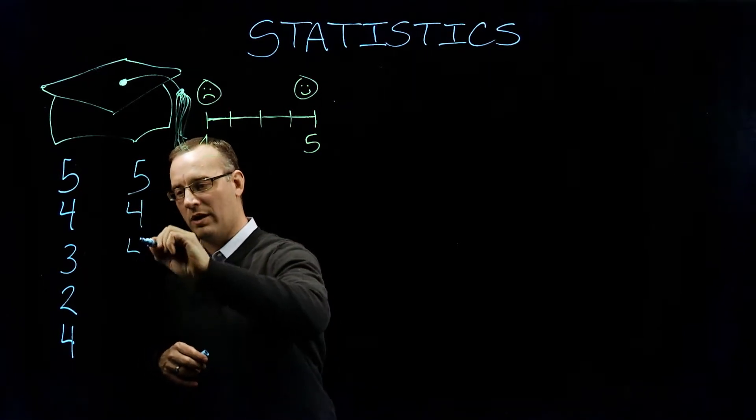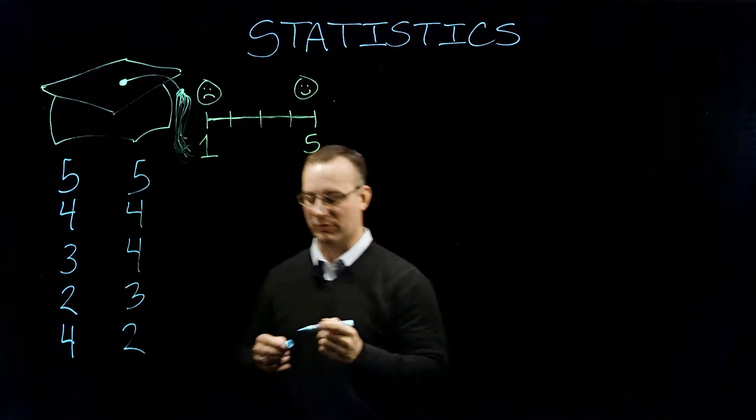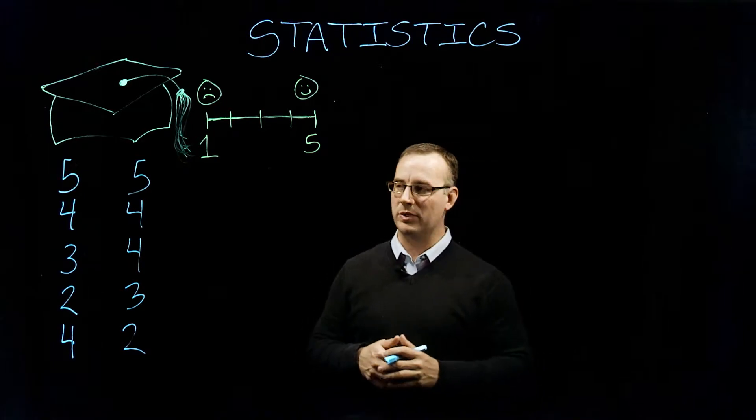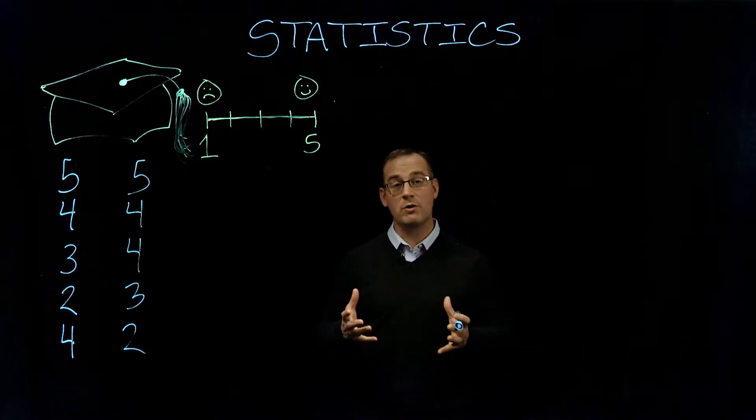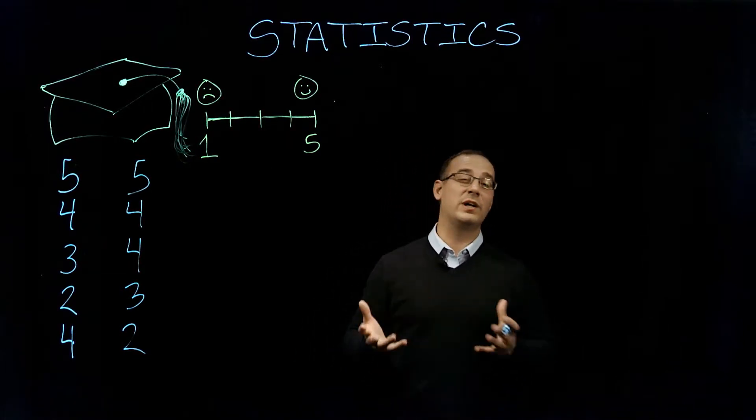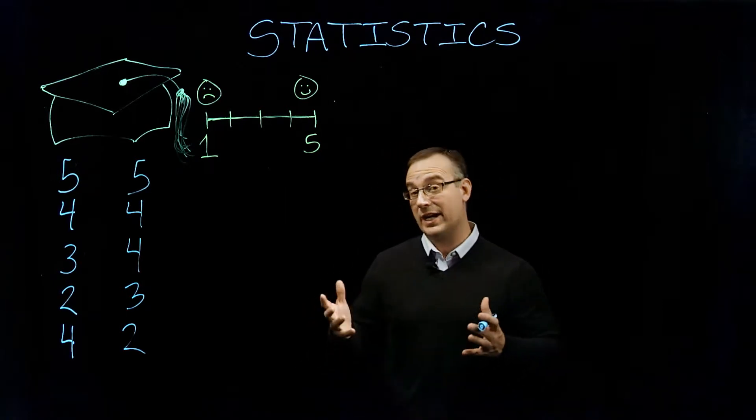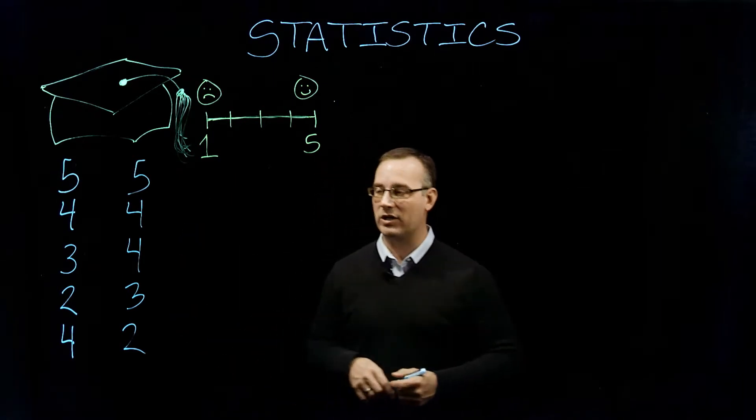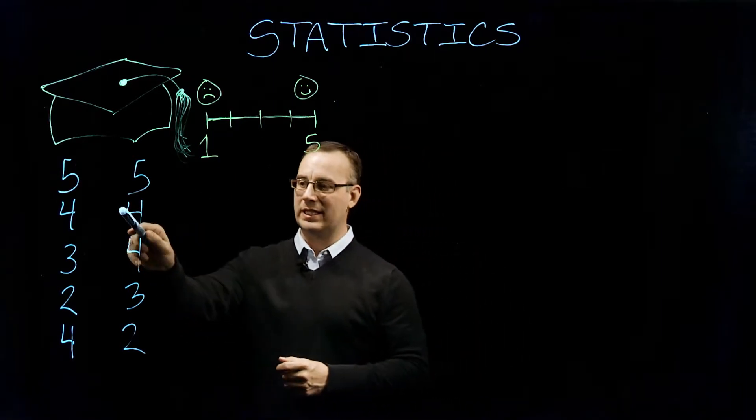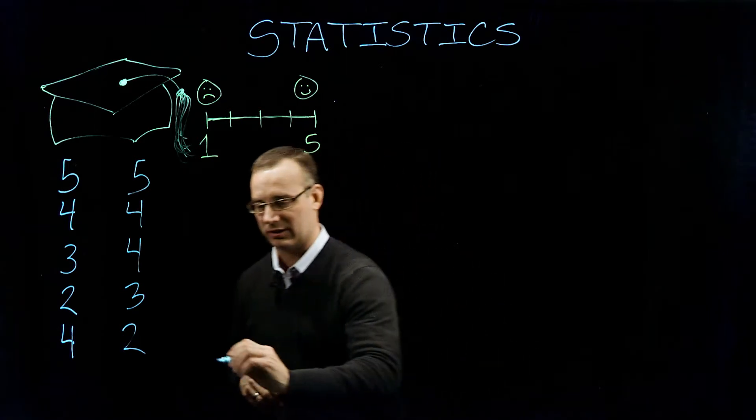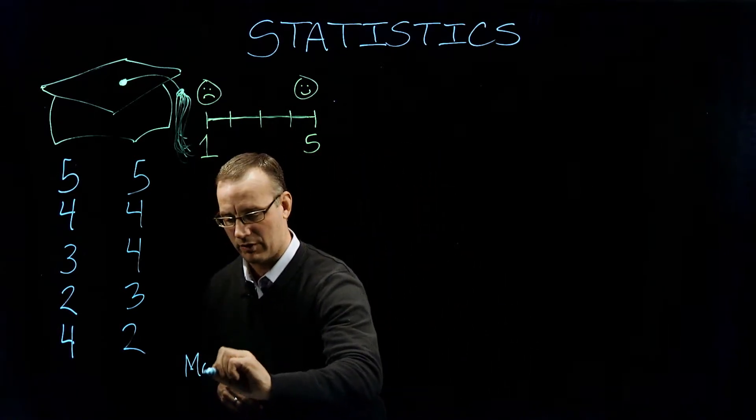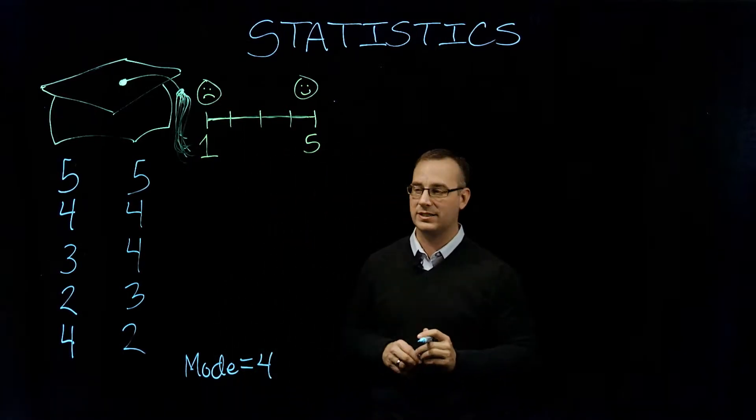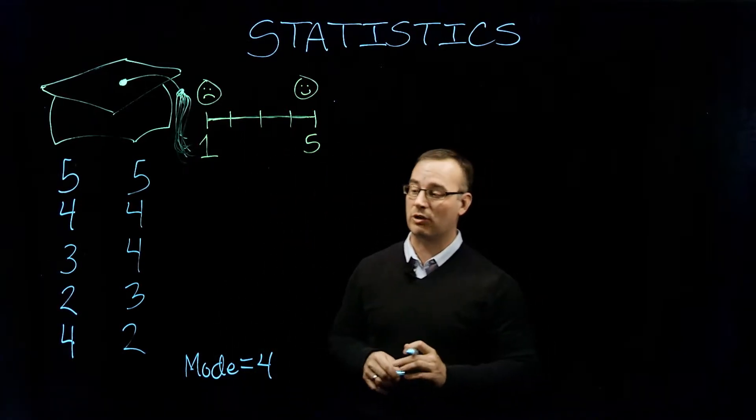So we have five, four, four, three, and two. So let's talk about one of our first measures of central tendency, which is mode. Mode is just the most frequently occurring data variable in our data set. So the most frequently occurring, if we just do a visual scan of our data, we can easily see that four is the most frequently occurring. So we have our mode, we've just calculated our first measure of central tendency, that being our most frequently occurring.